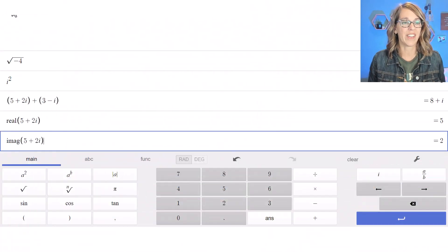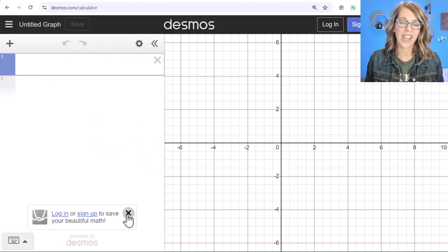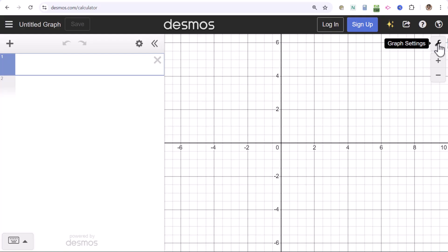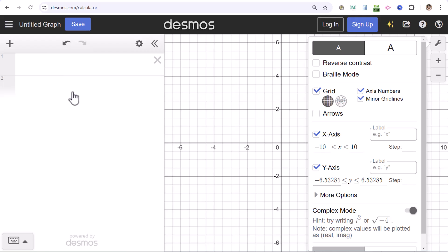You can do all of these operations and more but also visualize them with the graphing calculator. So let's switch to the graphing calculator. As I open up the graphing calculator in Desmos, I also need to turn on the complex mode. So I'm going to go to the graph settings and toggle on complex mode.